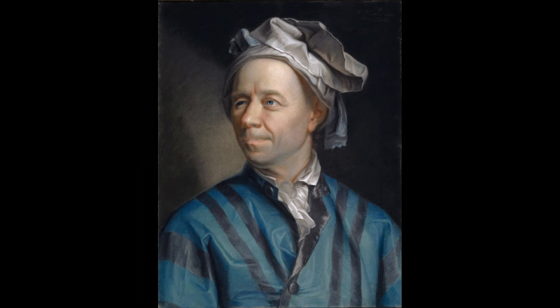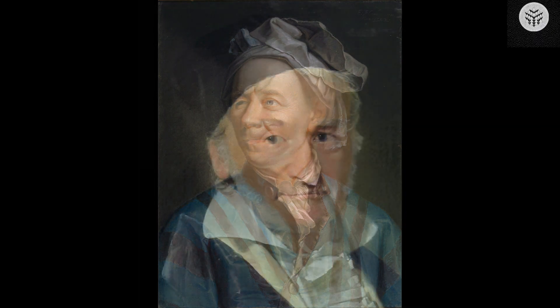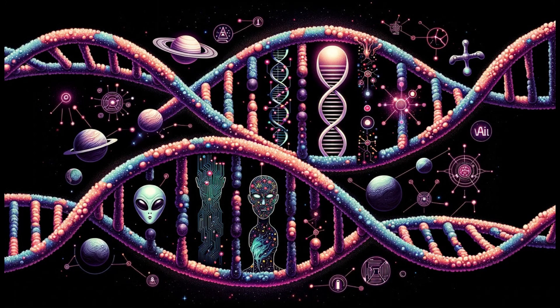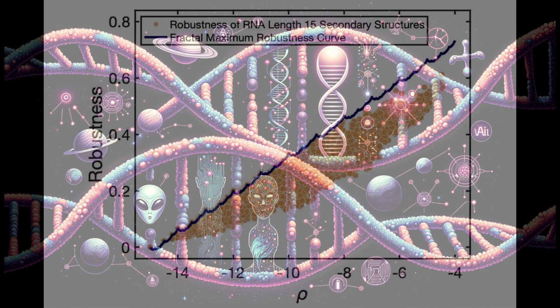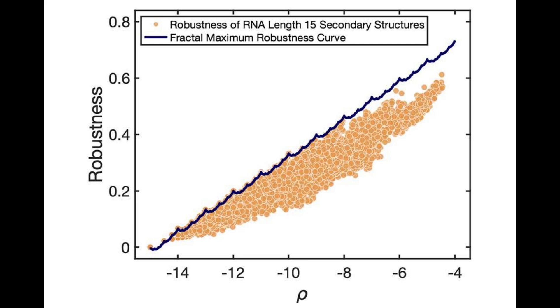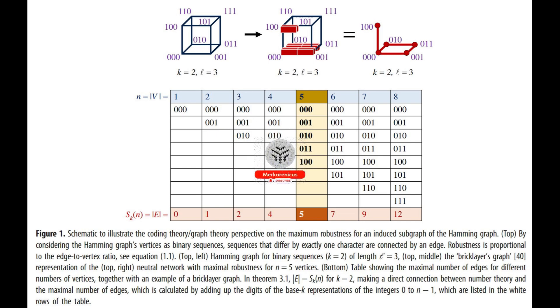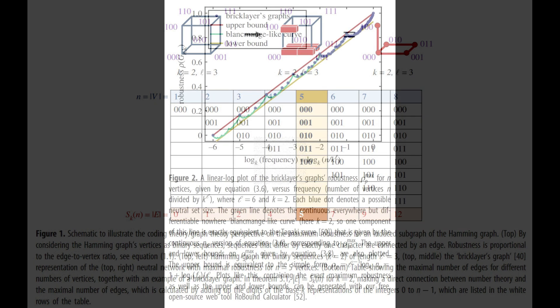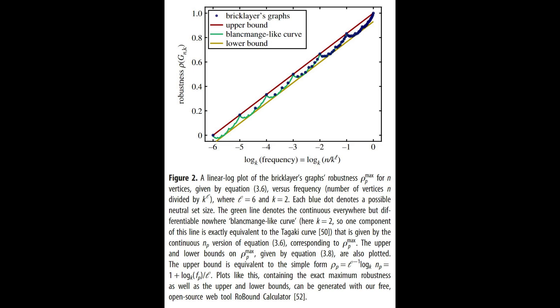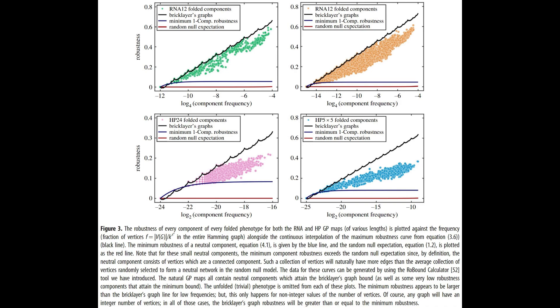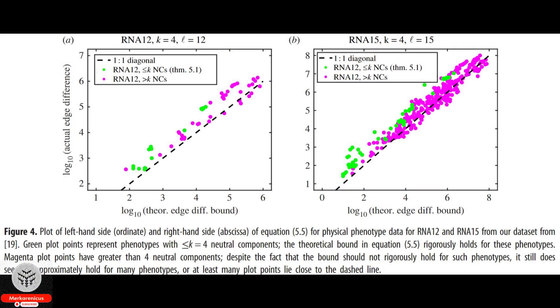According to Professor Ard Lewis, who spearheaded the research at the University of Oxford, it has been established that numerous biological systems demonstrate exceptional phenotype robustness, a crucial element for the feasibility of evolution. However, our knowledge was limited regarding the potential for absolute maximal robustness, leaving uncertainty as to whether such a maximum even existed. The team has successfully addressed this question by demonstrating a direct correlation between the highest level of resilience and the logarithm of the fraction of potential sequences that correspond to a specific phenotype.